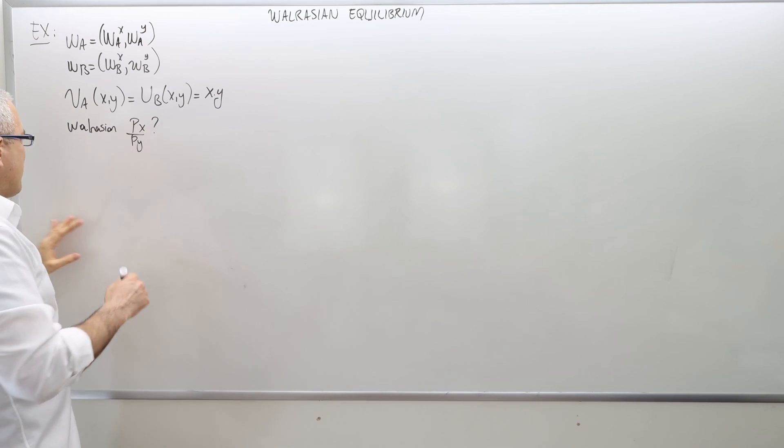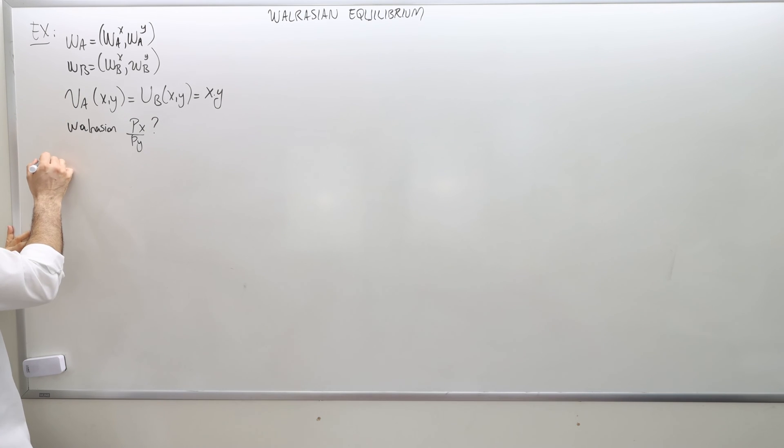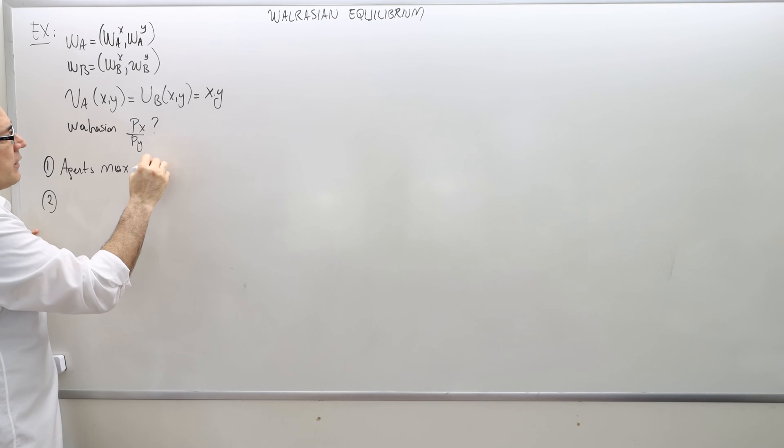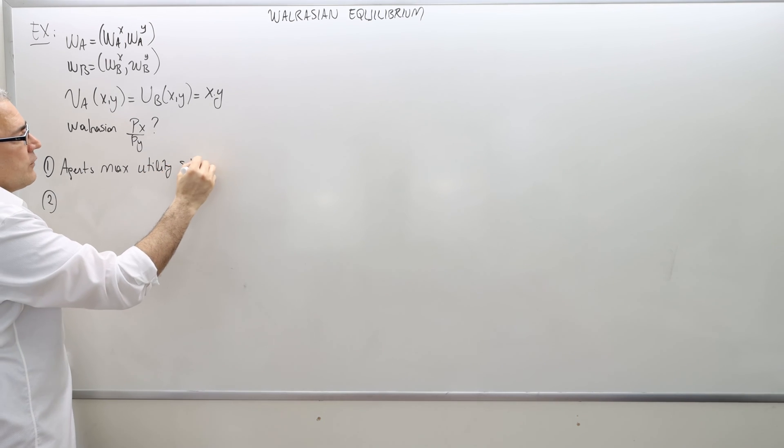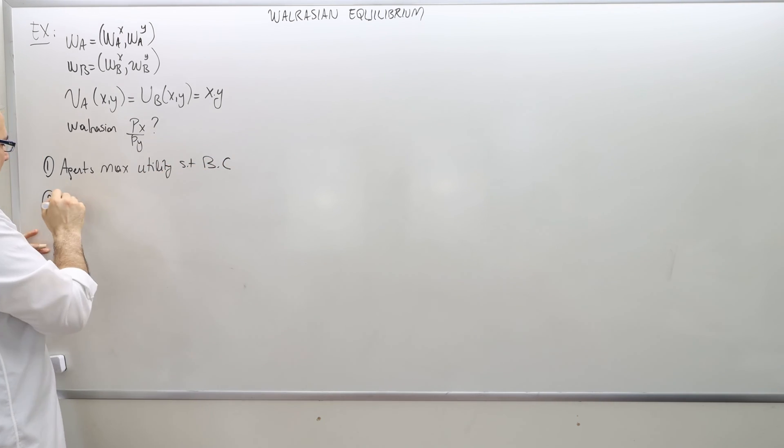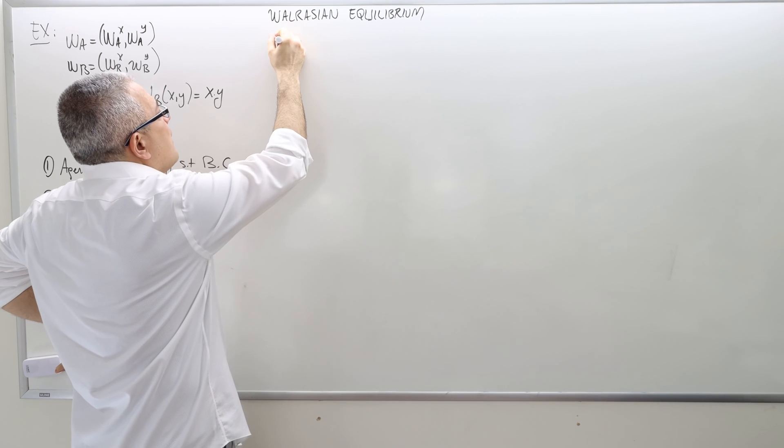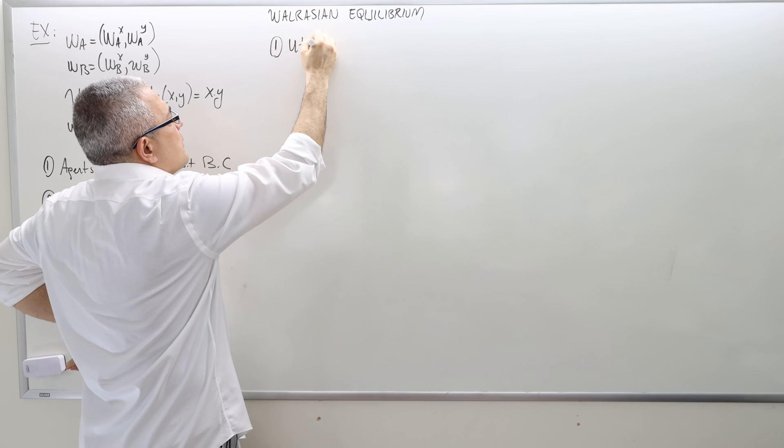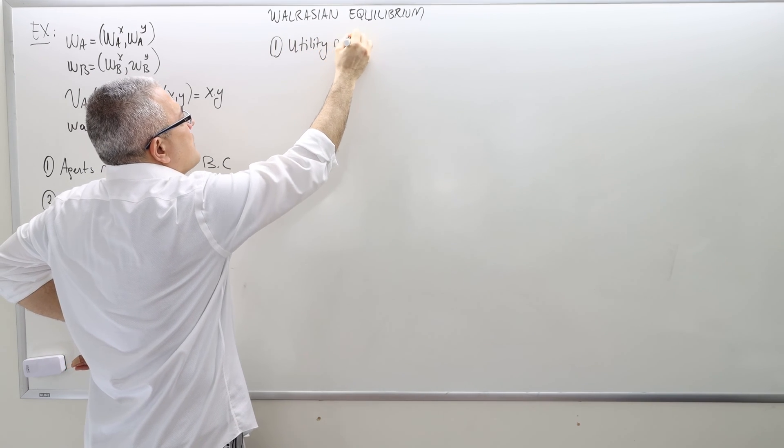So if you remember the Walrasian equilibrium, we have to have two things. One, agents maximize utility subject to budget constraint, and then market clears. So the first part, utility maximization.